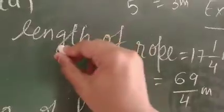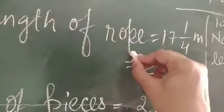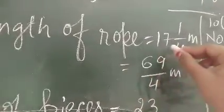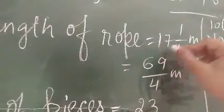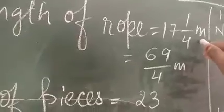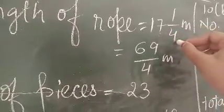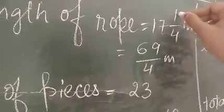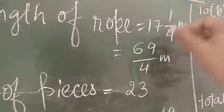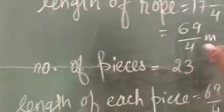Let the length of rope be 17 and 1/4 meters, which equals 69/4 meters.